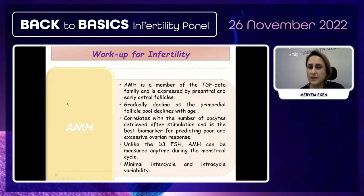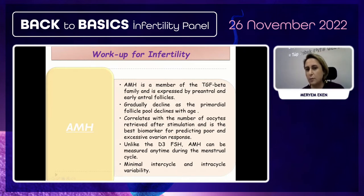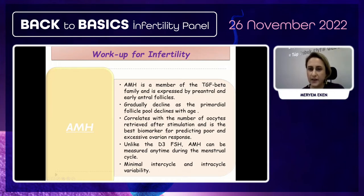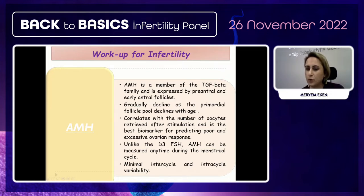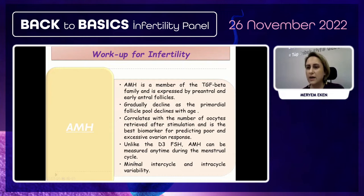In our clinic, AMH is always used to assess ovarian reserve. AMH is a member of the transforming growth factor beta family and is expressed in pre-antral and early antral follicles. It gradually declines as the primordial follicle pool declines with age. AMH correlates with the number of oocytes retrieved after stimulation and is the best biomarker for predicting poor and excessive ovarian response. Unlike other tests, it can be measured at any time during the menstrual cycle with minimal variability.